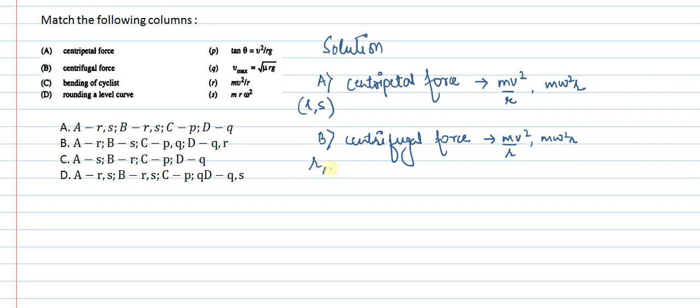Now let's talk about C, bending of cyclist. When a cyclist wants to take a turn, there is a certain angle at which he can take the turn. The maximum angle is given by tan θ = v²/rg. So C can be matched with P.